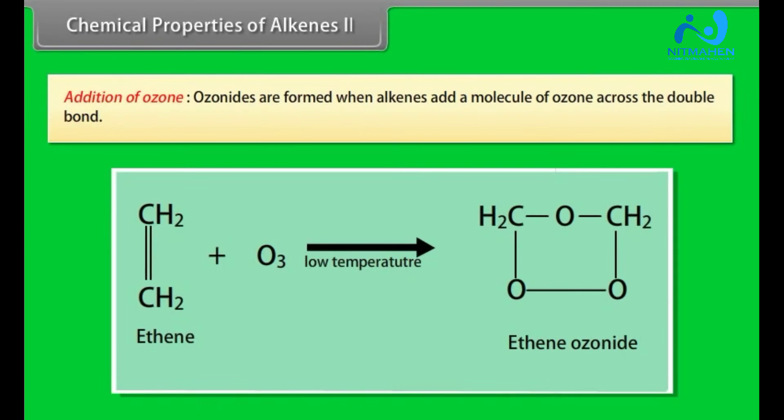Addition of Ozone: Ozonides are formed when alkenes add a molecule of ozone across the double bond. For example, ethene gives ethene ozonide.